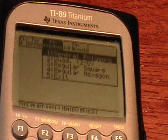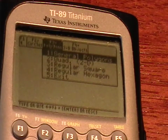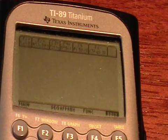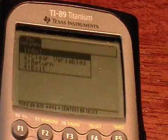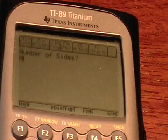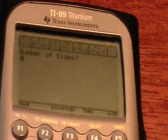It's tab F3, item number 1. And all you have to do is type in 4 for the number of sides, and it will give you all the information about that particular polygon.